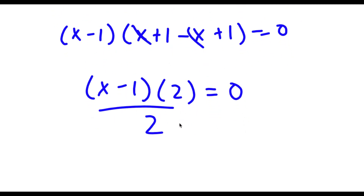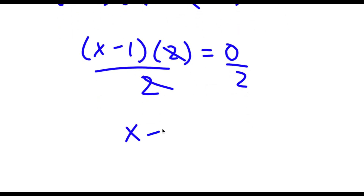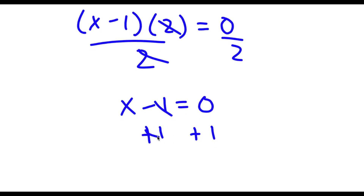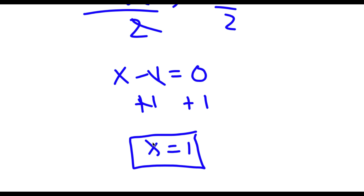Dividing both sides by 2, I get x - 1 = 0. Adding 1 to both sides gives x = 1. So x = 1 is my answer.